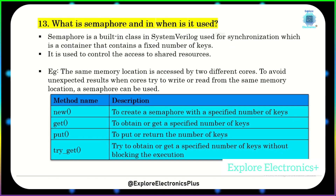What is a semaphore and where is it used? A semaphore is a built-in class of SystemVerilog used for synchronization — it is a container that holds a fixed number of keys. It is used to control access to shared resources. For example, when the same memory location is accessed by two different cores, a semaphore can be used to avoid unexpected results when cores try to read or write simultaneously. The methods used with a semaphore are new, get, put, and try_get.